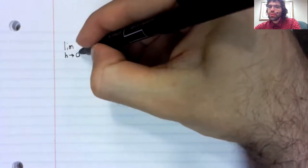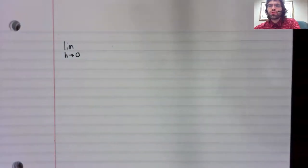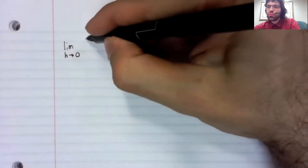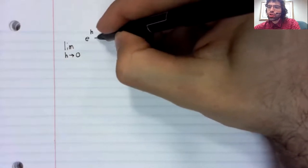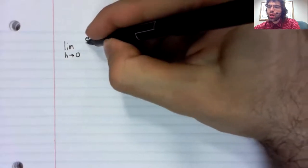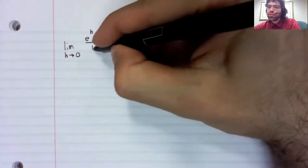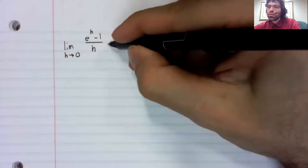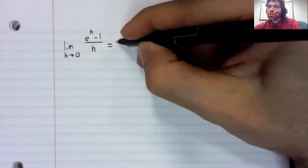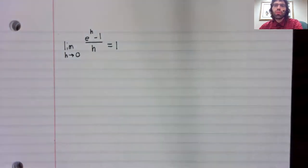The limit as h approaches zero of e to the h minus one divided by h turns out to be one.